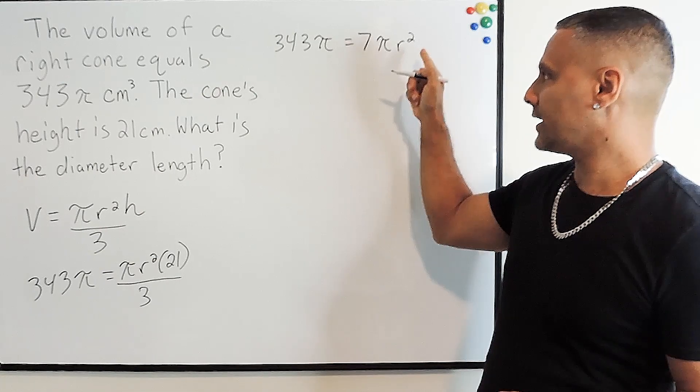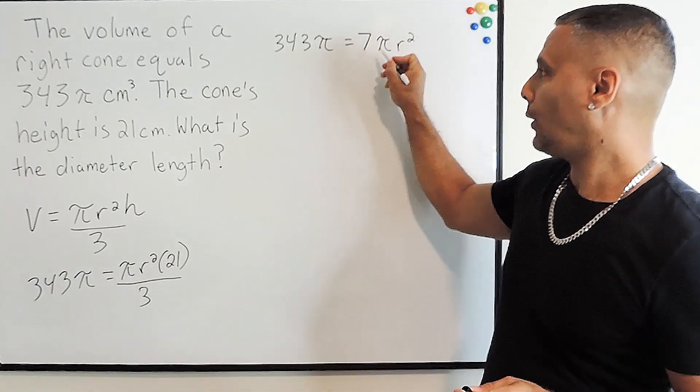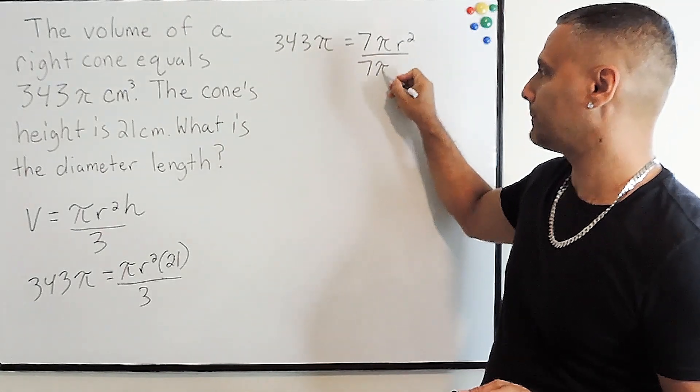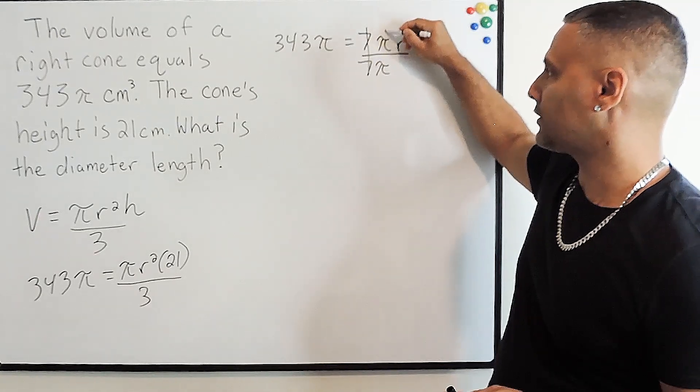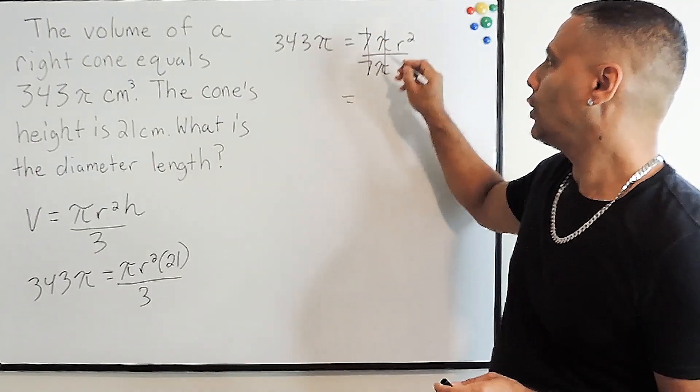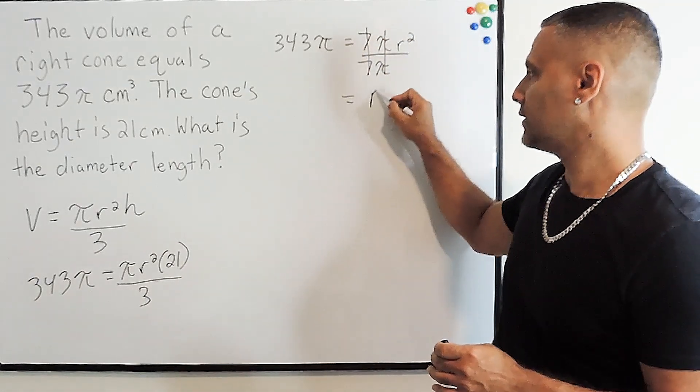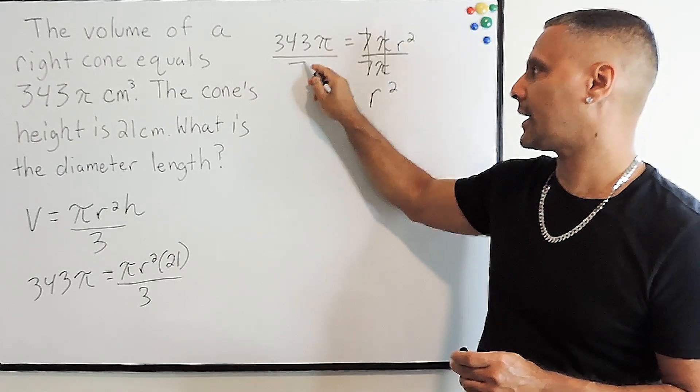To isolate r, we're going to take 7π and move it to the other side of our equation by dividing everything on the right by 7 and π. So 7 divided by 7 is 1, π divided by π is 1, so we have r² left over on this side. And we balance our equation by dividing this side by 7π.